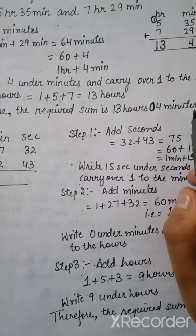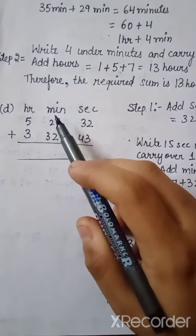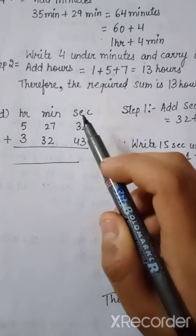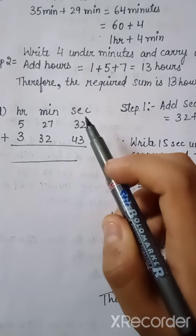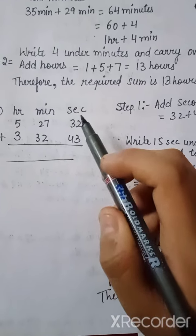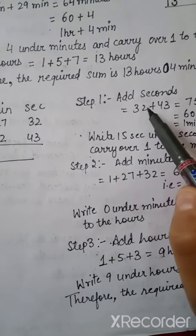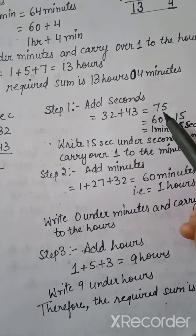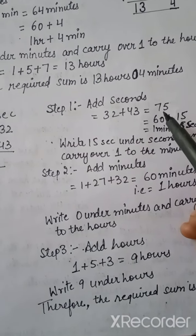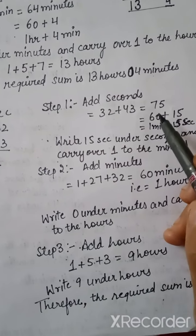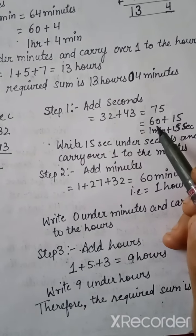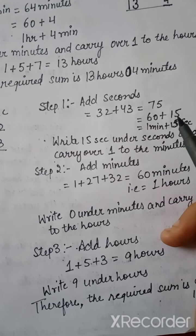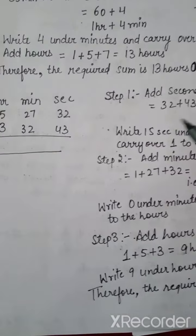Let us do another question — Part D of Exercise 10.3. This one has hours, minutes, and seconds. The first step is to add seconds. 32 plus 43 is 75. We split that as 60 plus 15. Since one minute equals 60 seconds, the 60 seconds converts to one minute, and 15 seconds remains to be written under the seconds column.